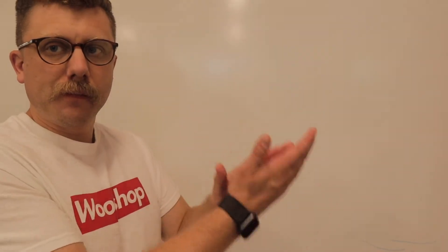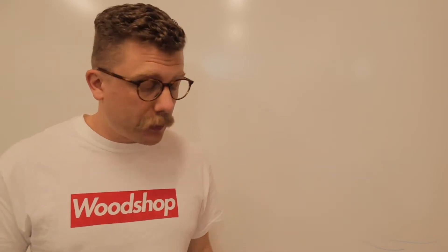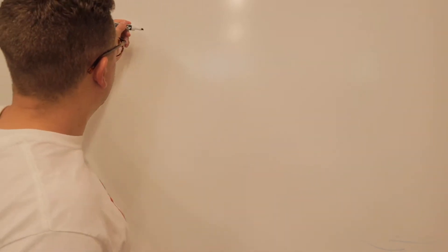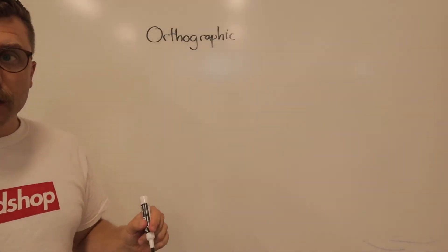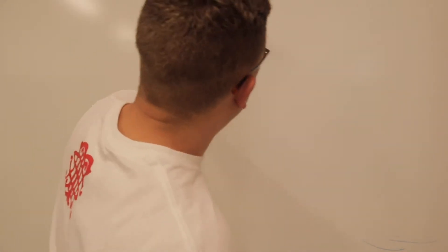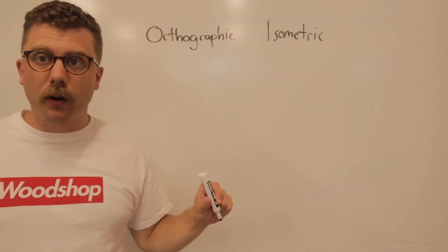Okay, everybody. Today we're going to talk about drawing. We usually draw two kinds of drawings when we make plans in this class. We make orthographic drawings and we make isometric drawings.